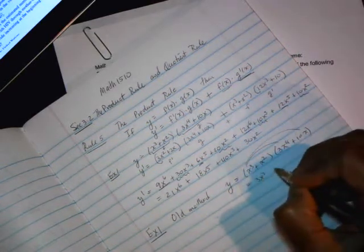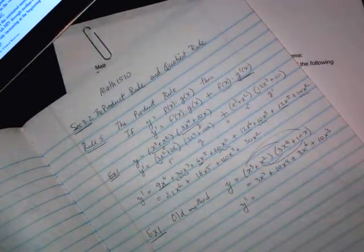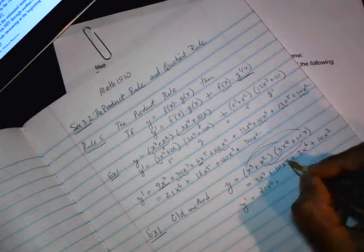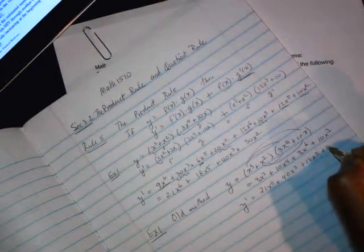3x to the 7th plus 10x to the 4th plus 3x to the 6th plus 10x cubed. And once it's in this format, you would use the basic rules from 3.1 and you get 7 comes down, 21x to the 6th, 4 comes down, 40x cubed, 18x to the 5th plus 30x squared.